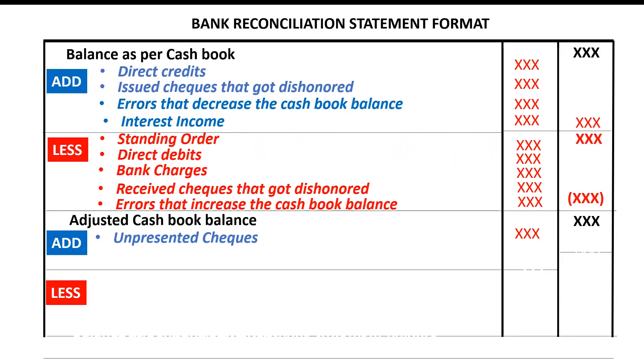Uncredited checks: just as you may pay suppliers by issuing checks, debtors may pay you by giving you a check. Your role is to present the check to the bank so they credit it to your account. However, if at the time you received the bank statement the bank hadn't yet credited your account with checks you had presented, these are considered uncredited checks. They represent money you have recognized as received in your cashbook but not yet recognized as received in the bank statement. We therefore subtract the uncredited checks from the adjusted cashbook balance when constructing the bank reconciliation statement.